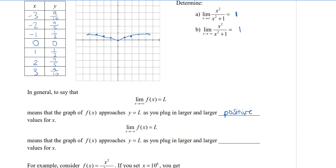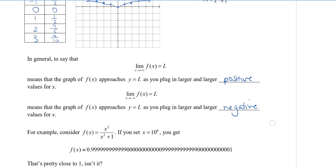If I put in a really large number, let's say x is 10 to the power of 6, we actually get this really long number. Notice it's 0.9 with lots of 9s here, and it's pretty close to 1.